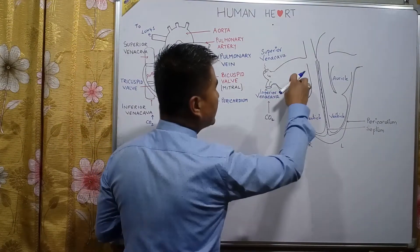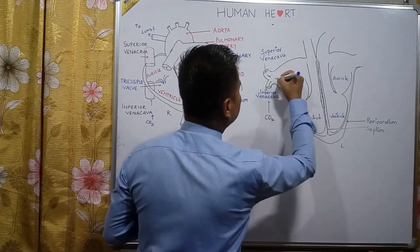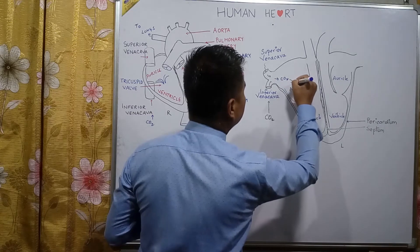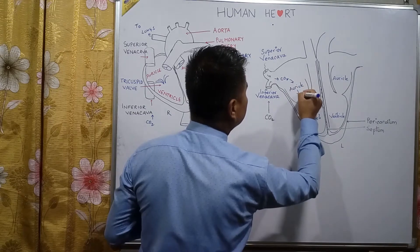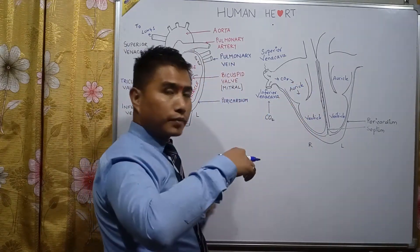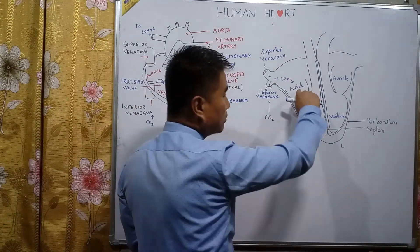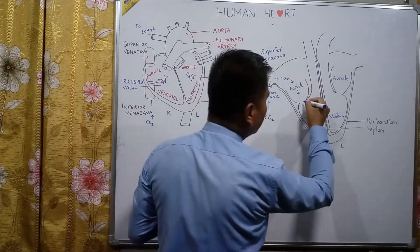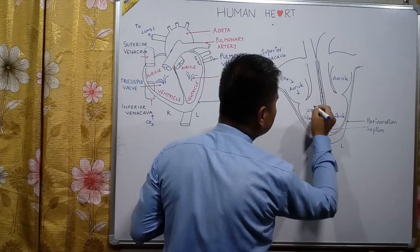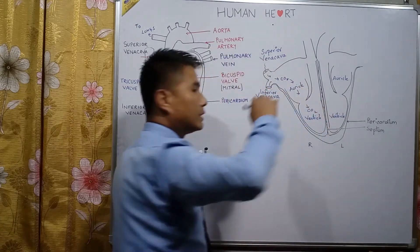Carbon dioxide-containing blood is carried to the right auricle, and from the auricle the carbon dioxide-containing blood enters the ventricle.